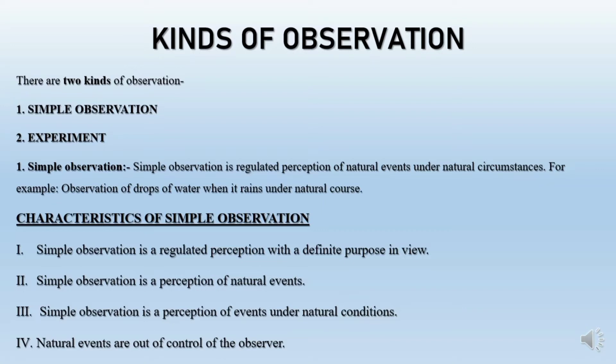Thirdly, simple observation is a perception of events under natural conditions. That means, in this kind of observation, we observe the natural events under natural conditions. And the last characteristic is that those natural events are out of the control of the observer.